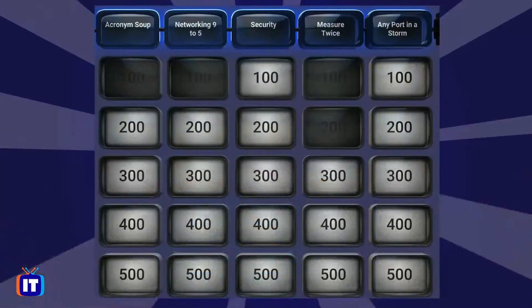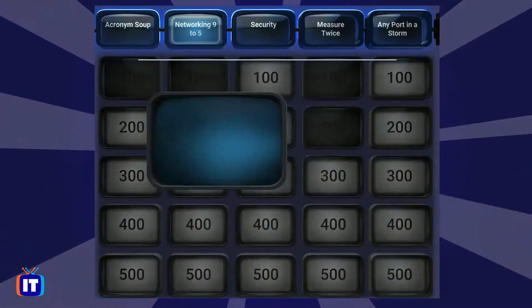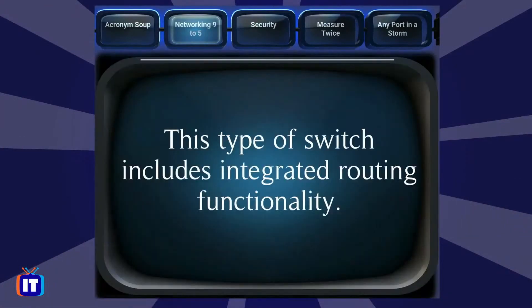Ronnie selects Networking 9 to 5 for $200. This type of switch includes integrated routing functionality. Wes answers: what is a Layer 3 switch? That is correct.